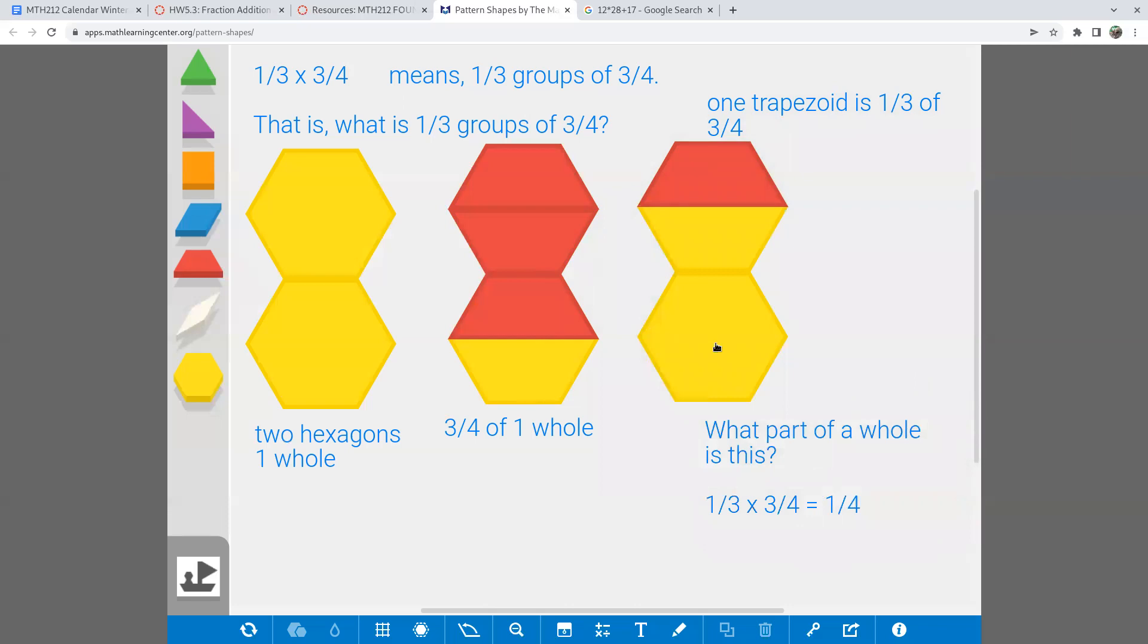So there's a three-step process that's going on here in order to use the idea of groups of to mean multiplication. Before I can tell you what one-third groups of three-fourths is, I first have to identify what is three-fourths. Once I have that, I can say, well, now I should be able to figure out what one-third of that is. So that's my step two there. And my step three is finally saying, well, what part of a whole did I end up with after I did that? And that's got to be the final answer.